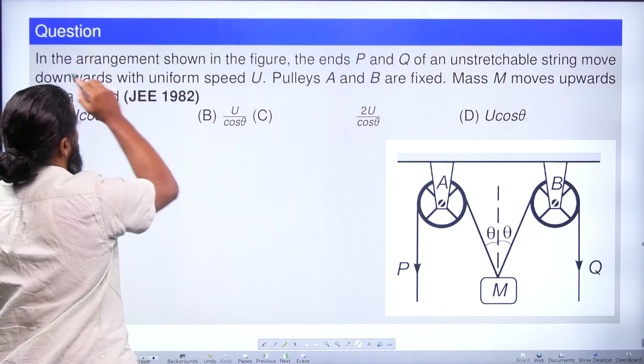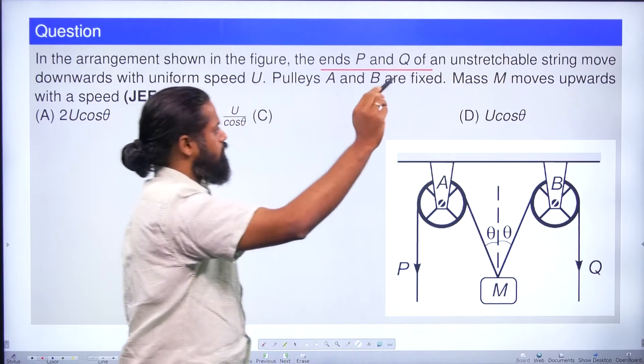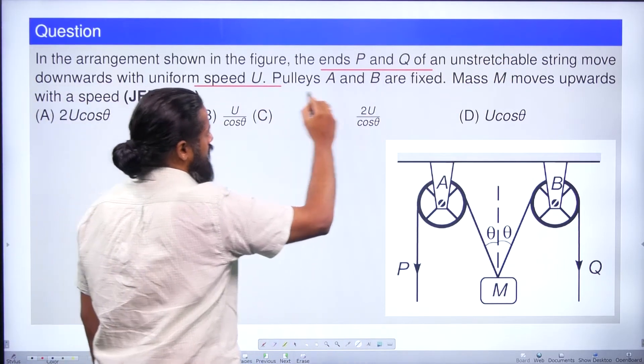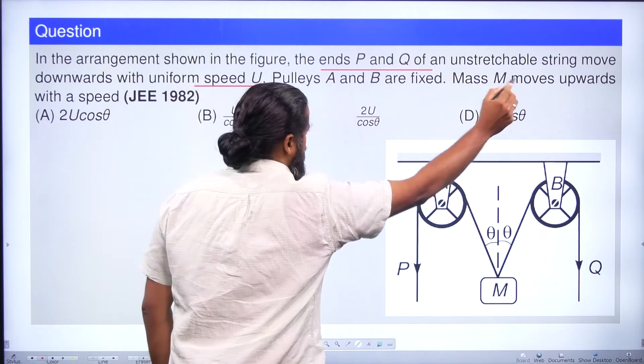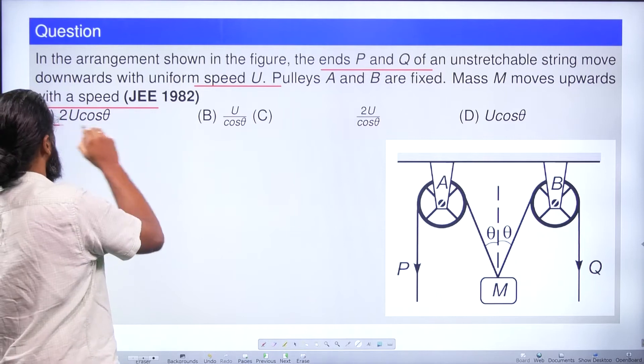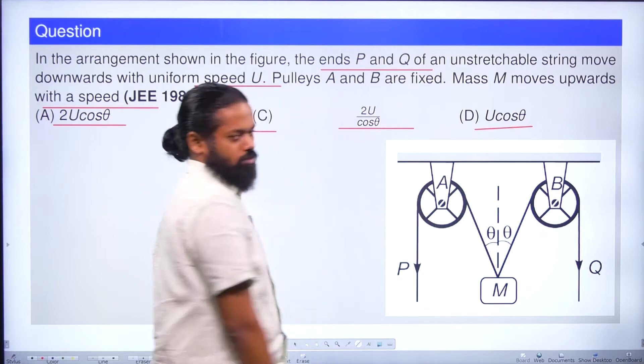See this question. In the arrangement shown in the figure, the ends P and Q of an unstretchable string move downward with uniform speed U. Pulleys A and B are fixed. Mass M moves upward with a speed of... Options are given: 2U cos θ, U by cos θ, 2U by cos θ, U cos θ.